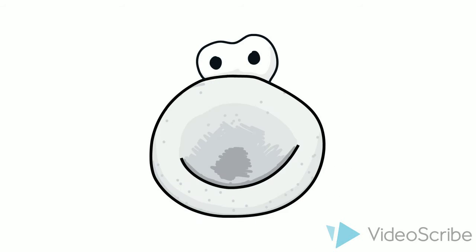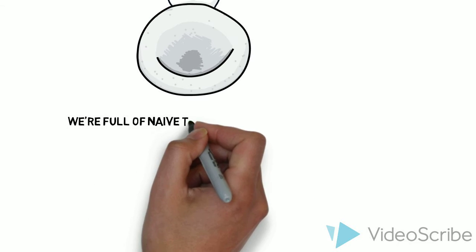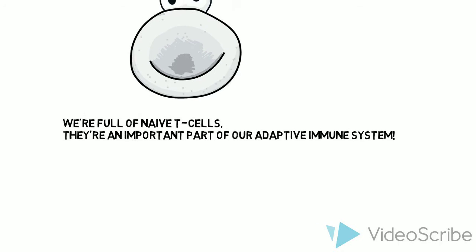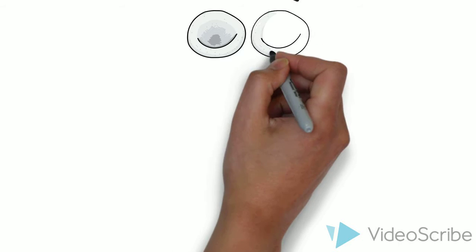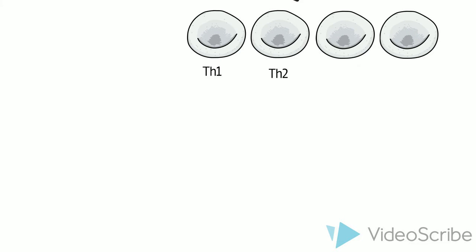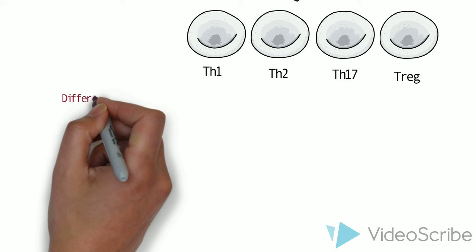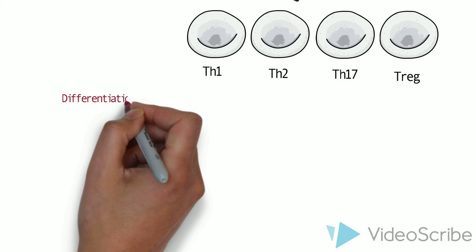Our bodies are full of naive T helper cells just floating around, and these become important to our adaptive immune system when they are told to differentiate into a variety of different T helper cells, of which there are four types: Th1, Th2, Th17, and Treg cells. The presence of different cytokines triggers differentiation into each type.